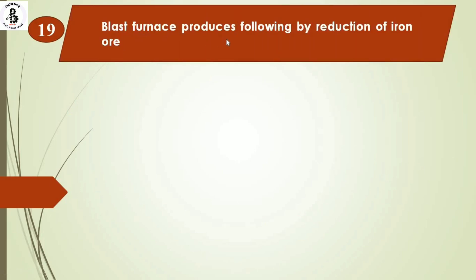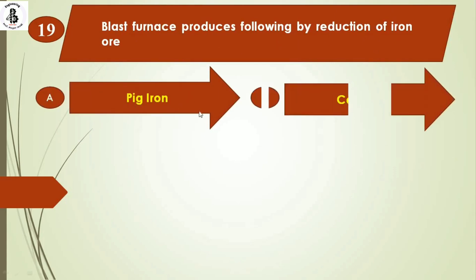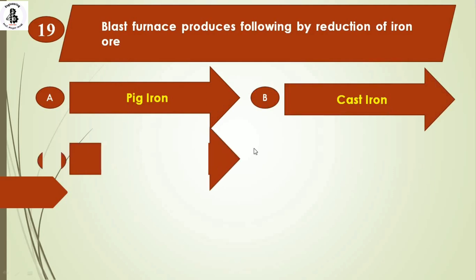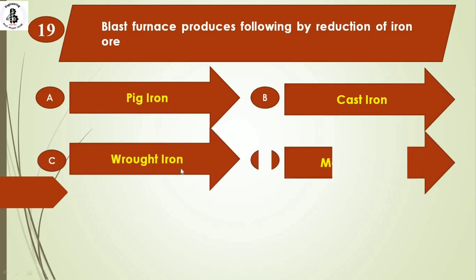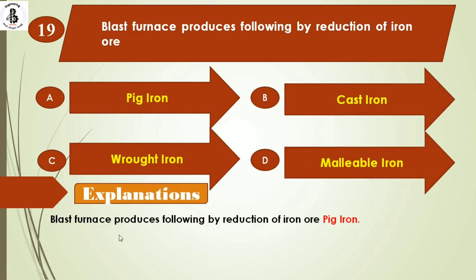The next question: a blast furnace produces the following by reduction of iron ore — option A) pig iron, option B) cast iron, option C) wrought iron, option D) malleable iron. The blast furnace produces pig iron, which is the basic iron found in natural environments. The right answer is option A, pig iron.